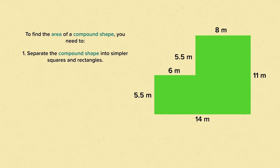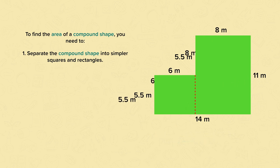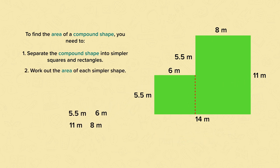To find the area of a compound shape you need to first separate the compound shape into the simpler squares and rectangles. There may be more than one way to separate the compound shape. There is more than one way to separate this compound shape into rectangles, but the answer will still be the same.